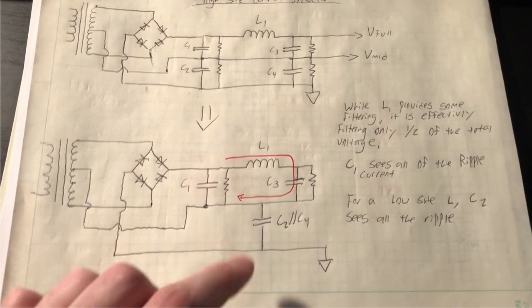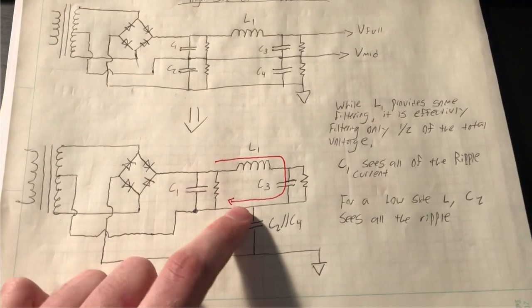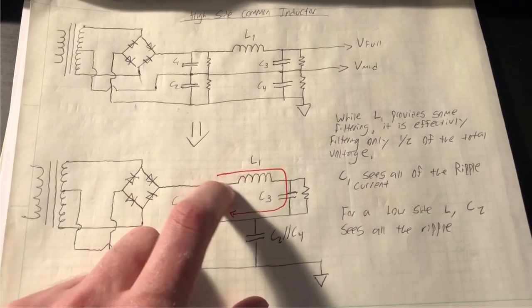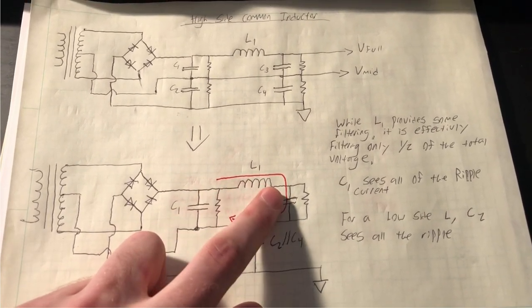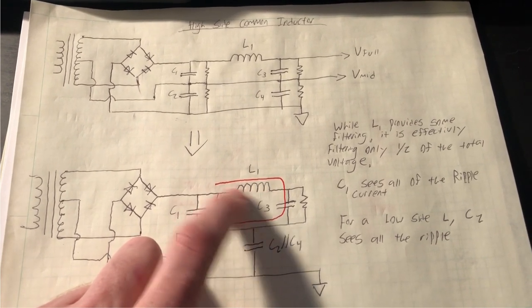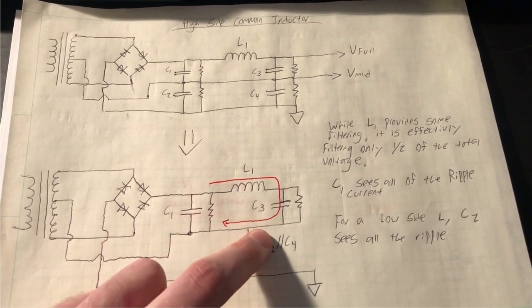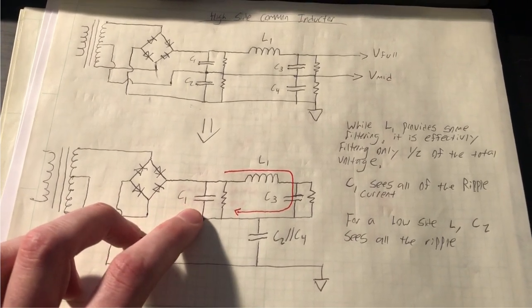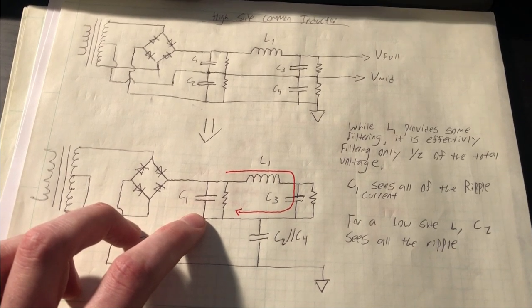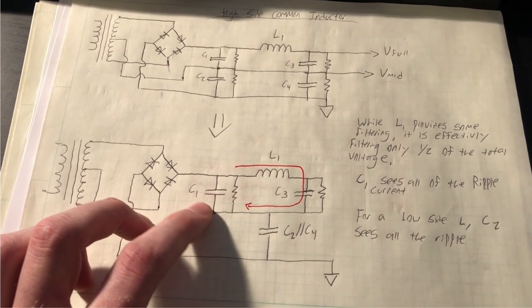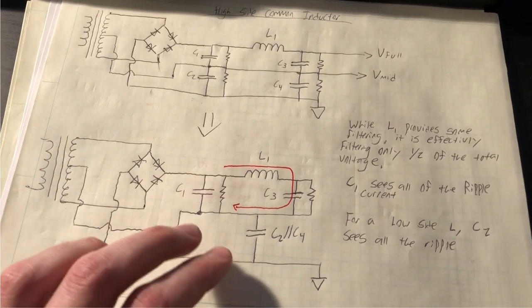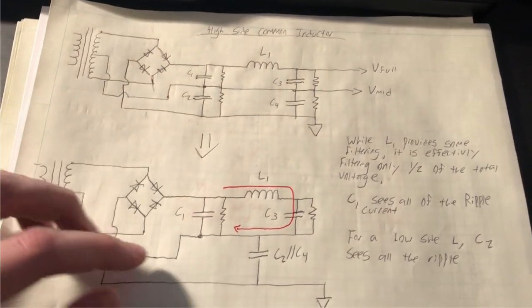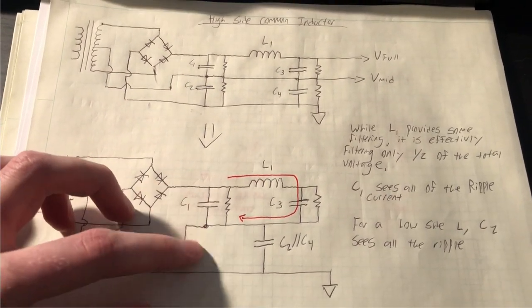The other thing I wanted to document here before we move on is because the voltage developed across L1, the ripple voltage due to the inductive effect of L1 is across here in C3. In this arrangement, C1 actually sees all of the ripple current and ripple voltage. And again, simulations also prove this to be true. So it's something to be aware of if you're looking at doing this type of arrangement and you have filtering up here. C1 will see all of the ripple.